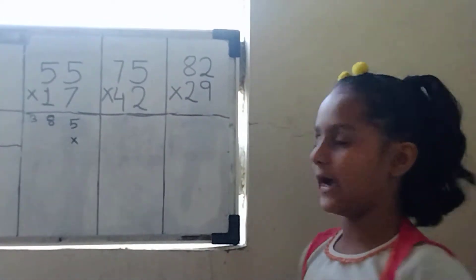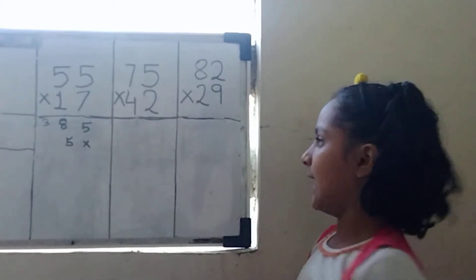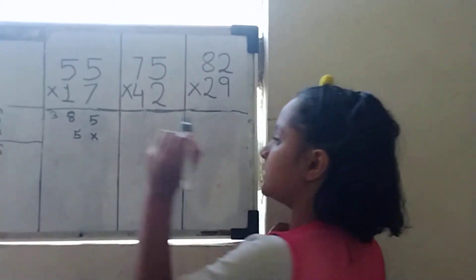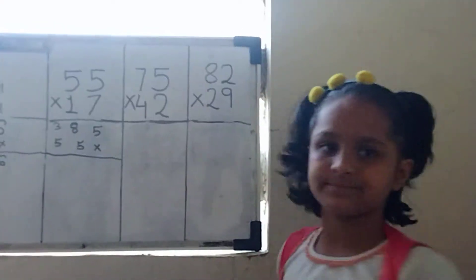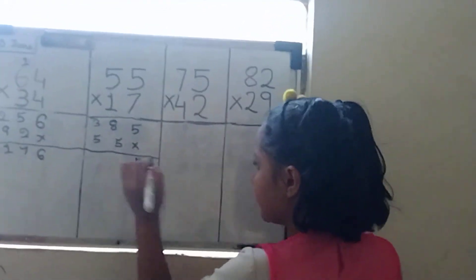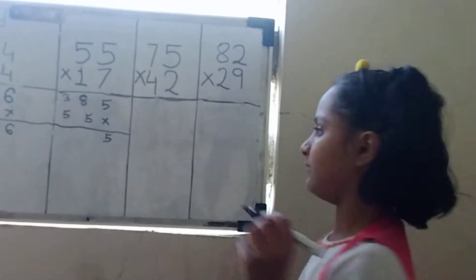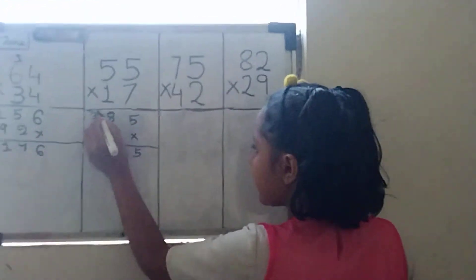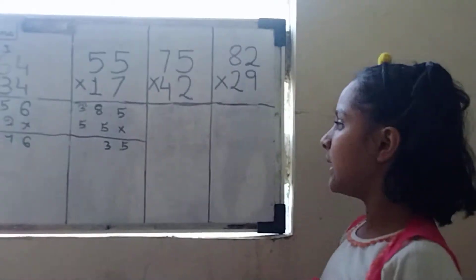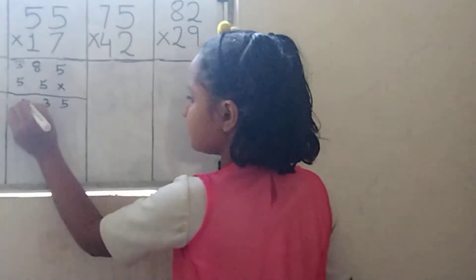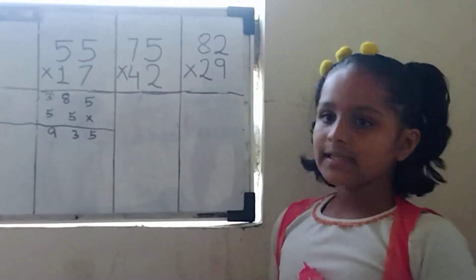Then we will multiply 5 multiplied by 1 equals to 5. And 5 multiplied by 5 equals to 5. Then we will do plus. 5 will be here and 5 plus 8 equals to 13. Then we will write 3 here and 1 will be carried over. Then 5 plus 3 equals to 8 and plus 1 equals to 9. Then our total answer is 935.